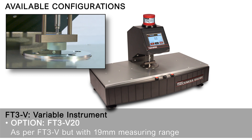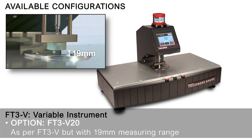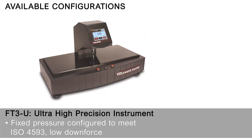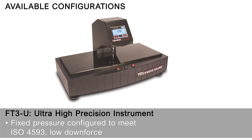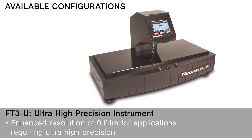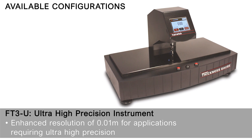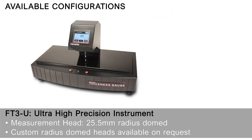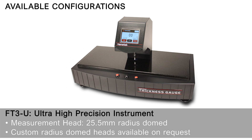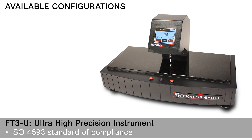Option FT3 V20: as per FT3V but with a 19mm measuring range. FT3U Ultra High Precision instrument: fixed pressure configured to meet ISO 4593 low downforce, with enhanced resolution of 0.01 micron for applications requiring ultra high precision. Features a 25.5mm radius domed measurement head; custom radius domed heads are available on request.